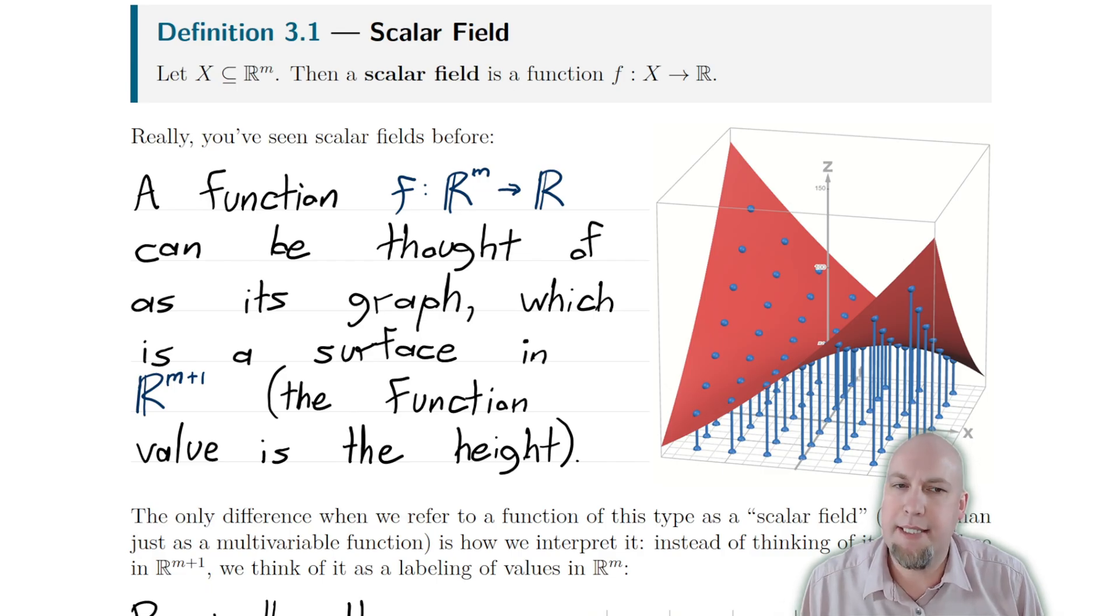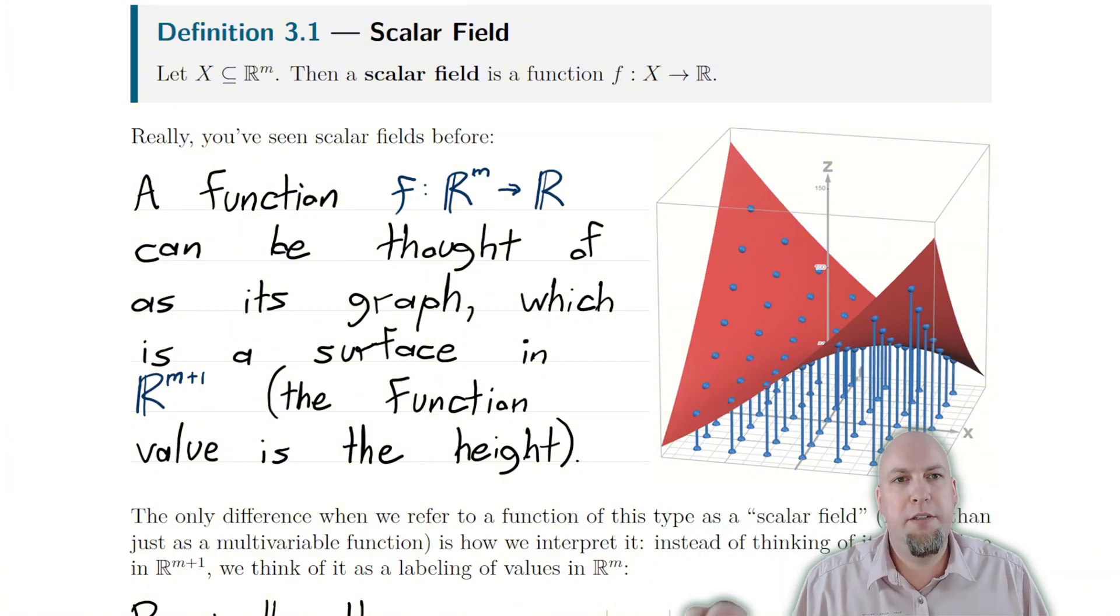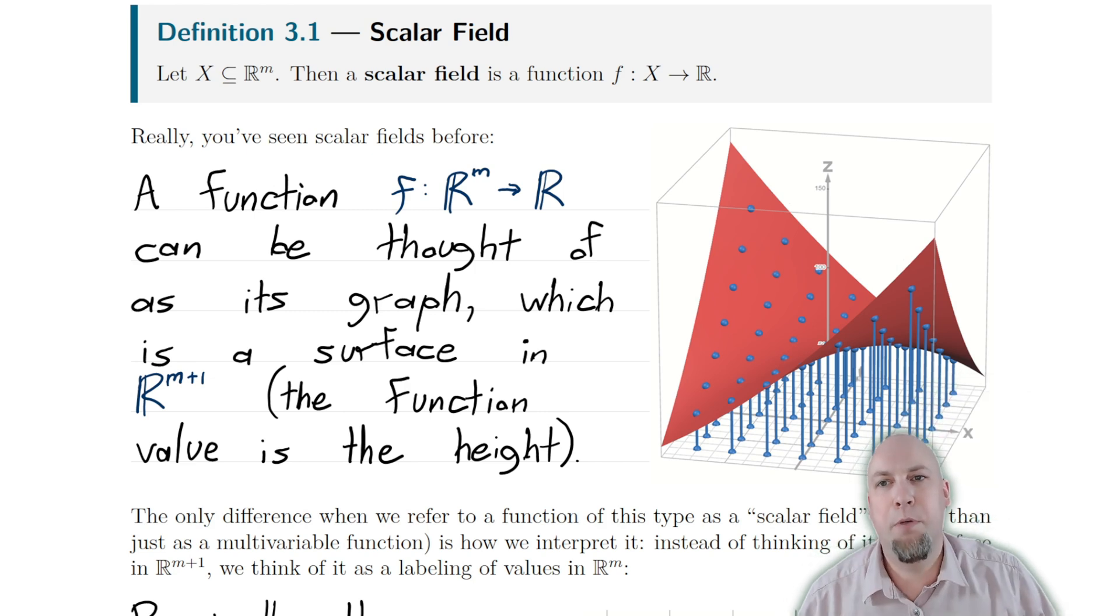You've probably already seen one way of visualizing these sorts of functions in previous courses, and that was via surface plots. So back in multivariable calculus, you would have talked about how if you had a function like this from m dimensional space to one dimensional space, you probably didn't call it a scalar field back then, but if you have a function like this, what you can do is say the output of my function is going to be the height of a surface above the input points, above whatever point I'm plugging into the function.